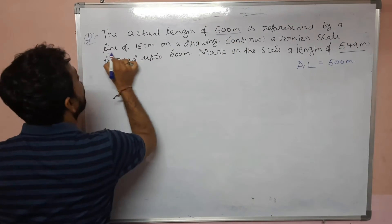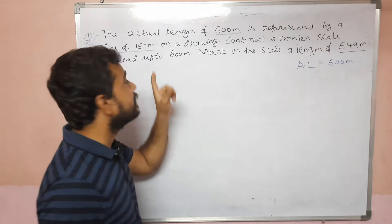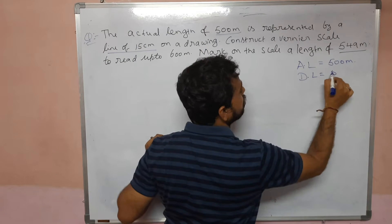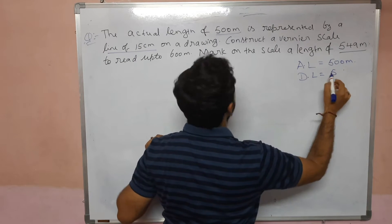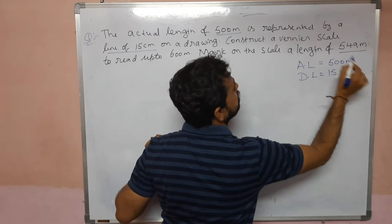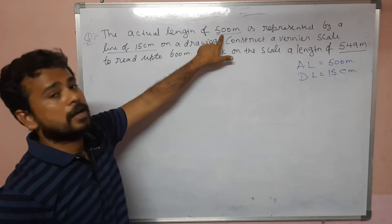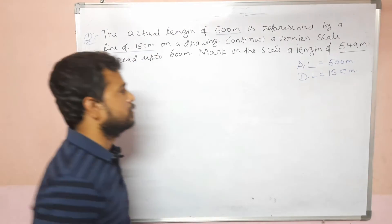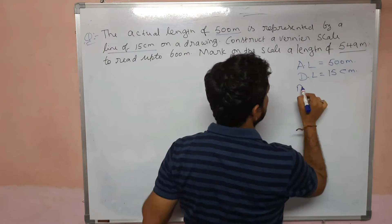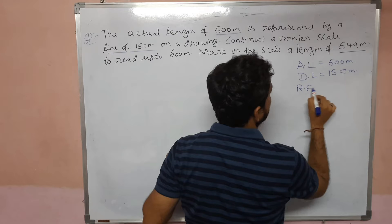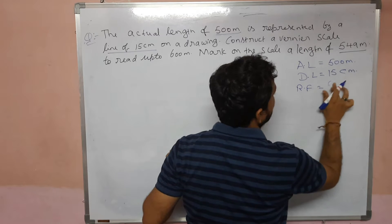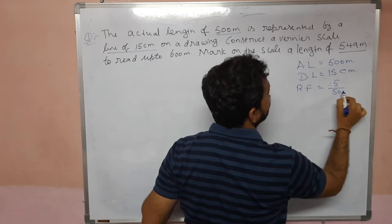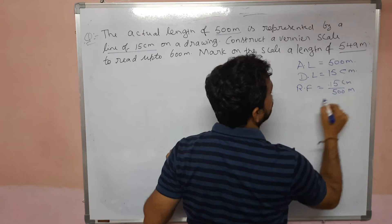This is a line of 15 centimeters — this is the drawing length. So now the representative factor will be drawing length divided by original length. This is centimeters and this is meters.